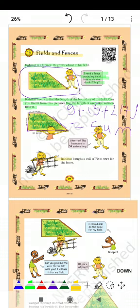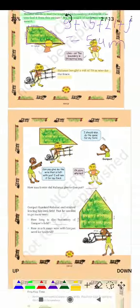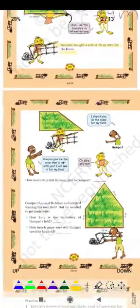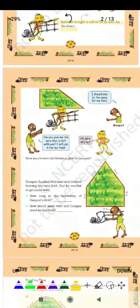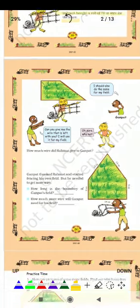Rehmat bought a roll of 70 मीटर wire for the fence. वो 70 मीटर का wire लेकर आया अपने 54 मीटर के खेत की boundary में लगाने के लिए।